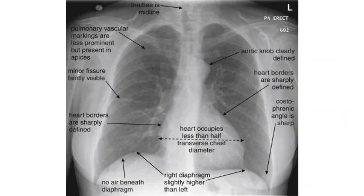A chest X-ray shows the shadow of the heart, from which we can extract lots of information. The heart is one third of the midline to the right and two thirds to the left, and its diameter should be less than half the diameter of the chest wall.